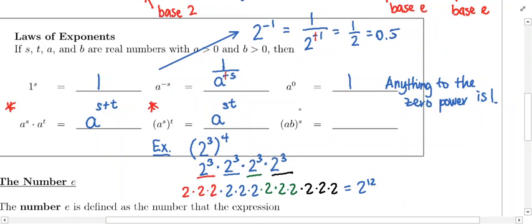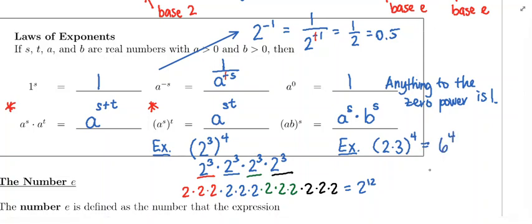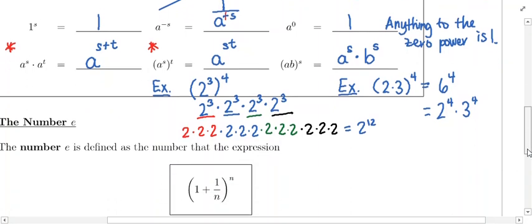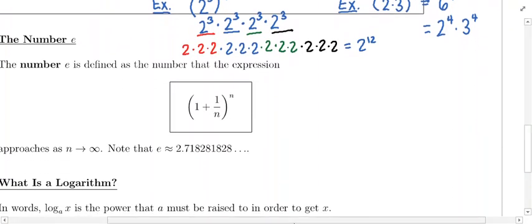The last property: you have (a times b) in parentheses raised to the s power. That's equivalent to raising a to the s power and multiplying by b to the s power. For example, (2 × 3) to the 4th power could be written as 6 to the 4th, or equivalently as 2 to the 4th times 3 to the 4th, and you'd get the correct answer either way. These are good properties to know when solving exponential equations.